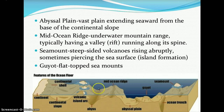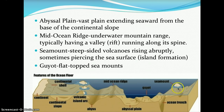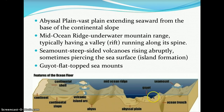A seamount is a steep-sided volcano rising abruptly, sometimes piercing the surface to create island formations. Seamounts are typical over hot spots — the Hawaiian Islands are seamounts. A guyot is a flat-topped seamount; due to erosion, you get that flat top.